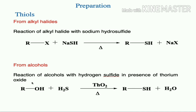The reaction of alcohol with hydrogen sulfide in the presence of thorium oxide as catalyst under thermal conditions leads to the formation of thiols. These are the two main methods for the preparation of thiols.